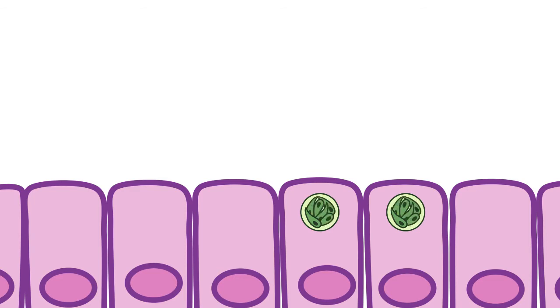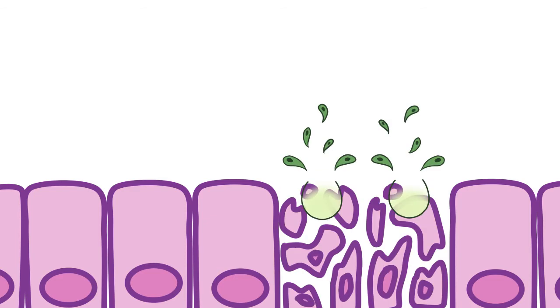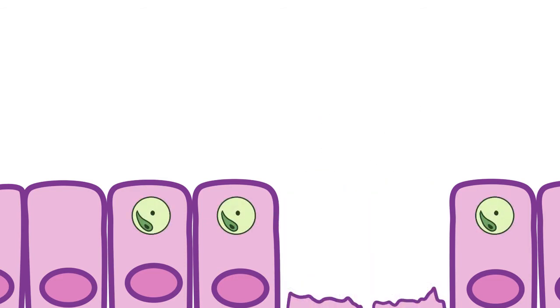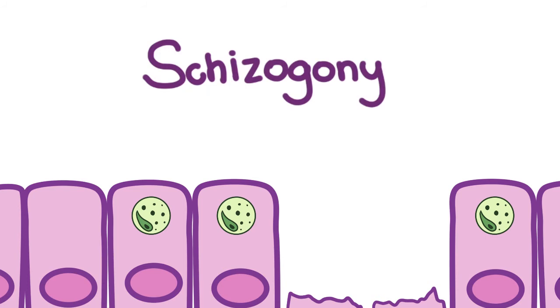The meronts become merozoites that are then released into the lumen, and they repeat this cycle of schizogony a number of times.